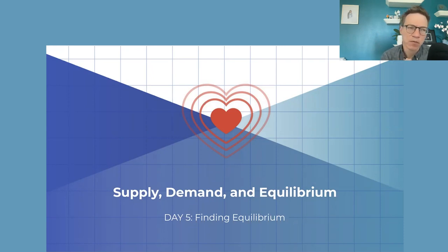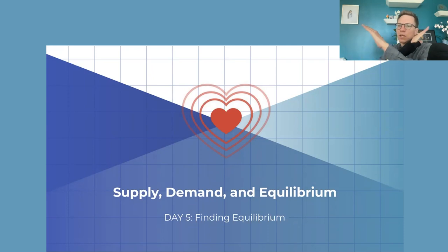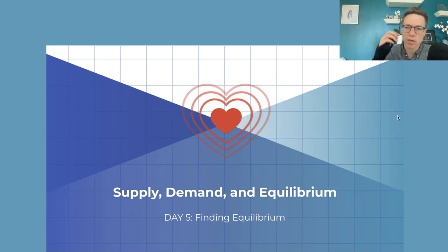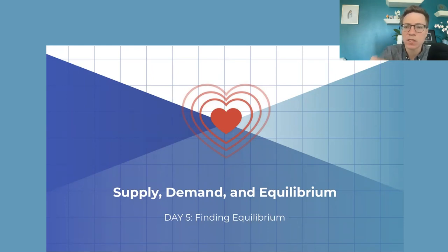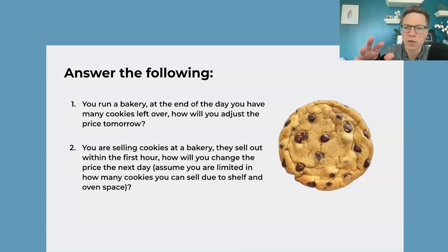So we covered the demand curve, we covered what moves the demand curve, and we've done the same with the supply curve. Now on day five, we're going to put the curves together to see the equilibrium, and then we're also going to cover shifts — if demand shifts, if supply shifts, what happens to that equilibrium price and quantity. The first half of this lesson covers equilibrium, and the second half covers those shifts.